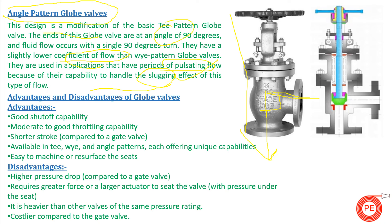Now for advantages and disadvantages of globe valves. Advantages include: good shut-off capability, moderate to good throttling capability, a shorter stroke meaning the stem movement is less compared to gate valves. They are available in T, Y, and angle patterns, each offering unique capabilities depending on your requirements. Additionally, the seat is easy to machine or resurface if erosion occurs.